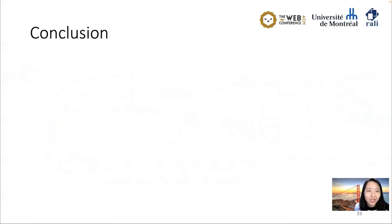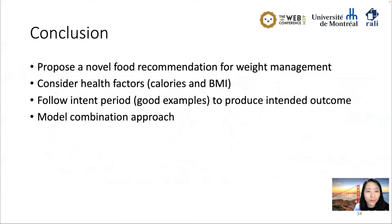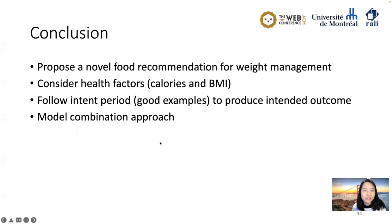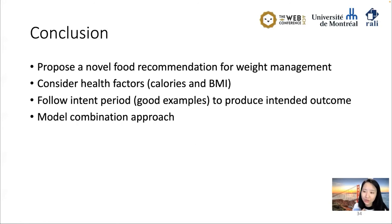In conclusion, we propose a novel food recommendation system for weight management that considers health factors including calorie and BMI, and follows intent periods — called good examples — to produce intended outcomes. We also explore model combination approaches, proven efficient in our experiments. By following good examples, our recommendation can guide users smoothly toward their intent goal while keeping users' preferences at all times. Thank you so much.